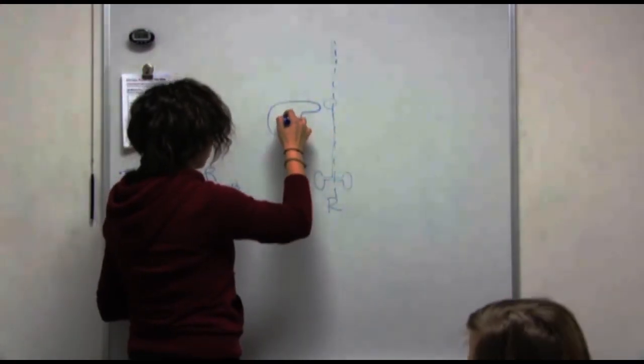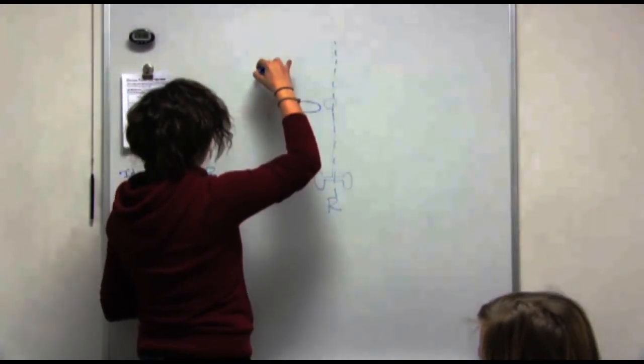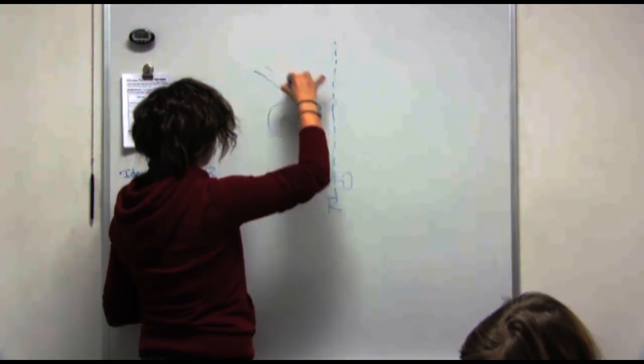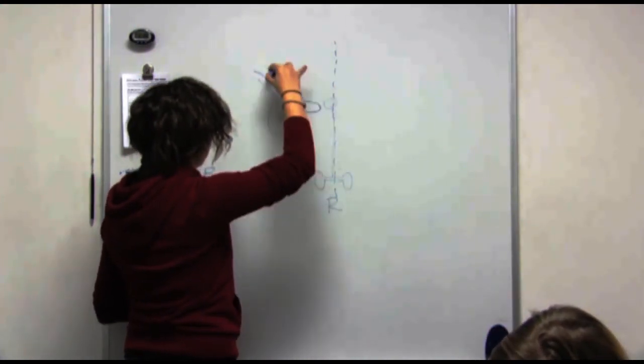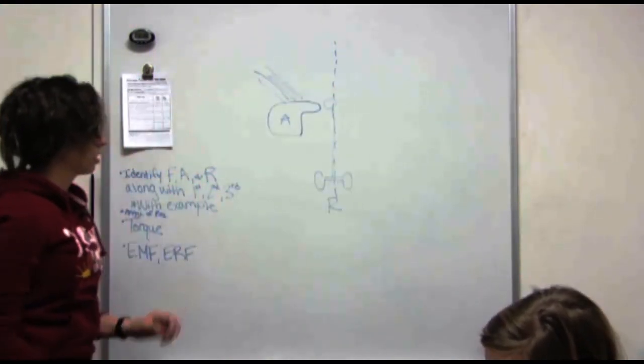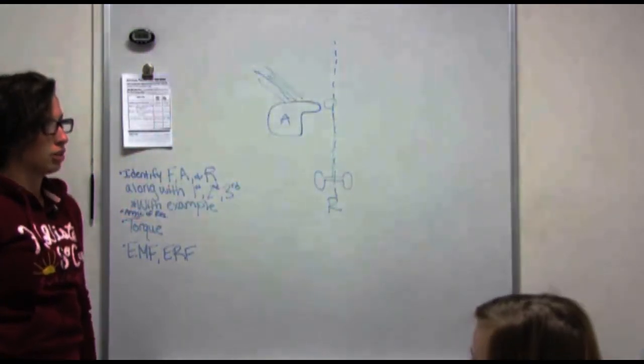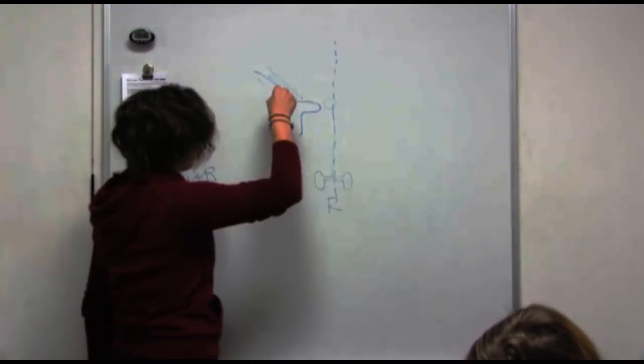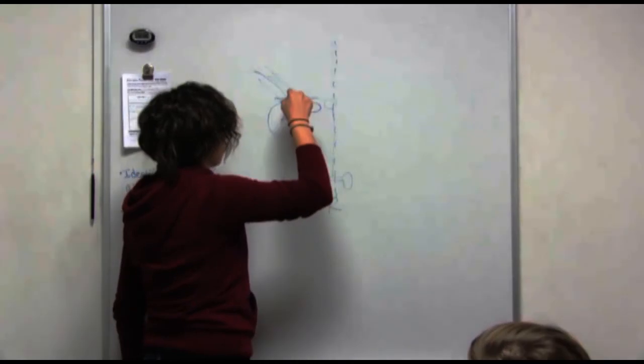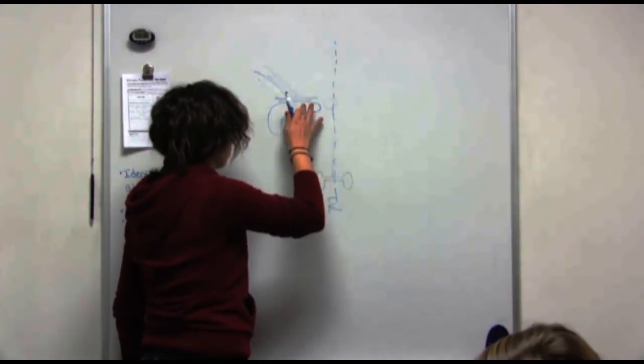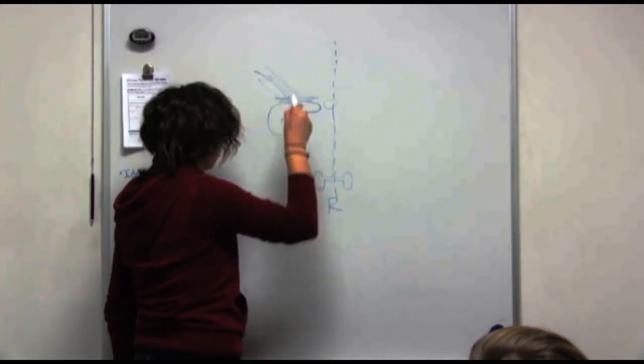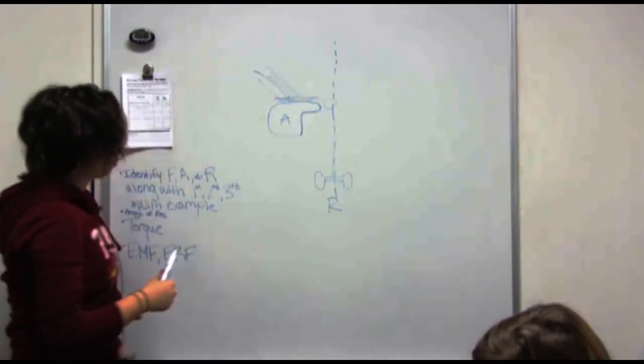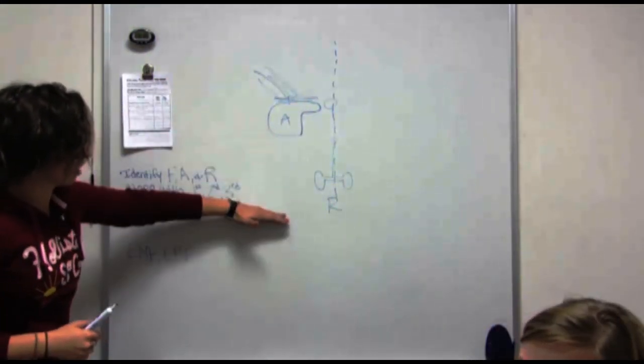So here is our axis because it's our scapula. And then the force would be your, because it's causing depression, so it would have to be your elevators, which would have to attach to the top here. So your force is here. So we have our force, then we have our axis, and then we have our resistance.